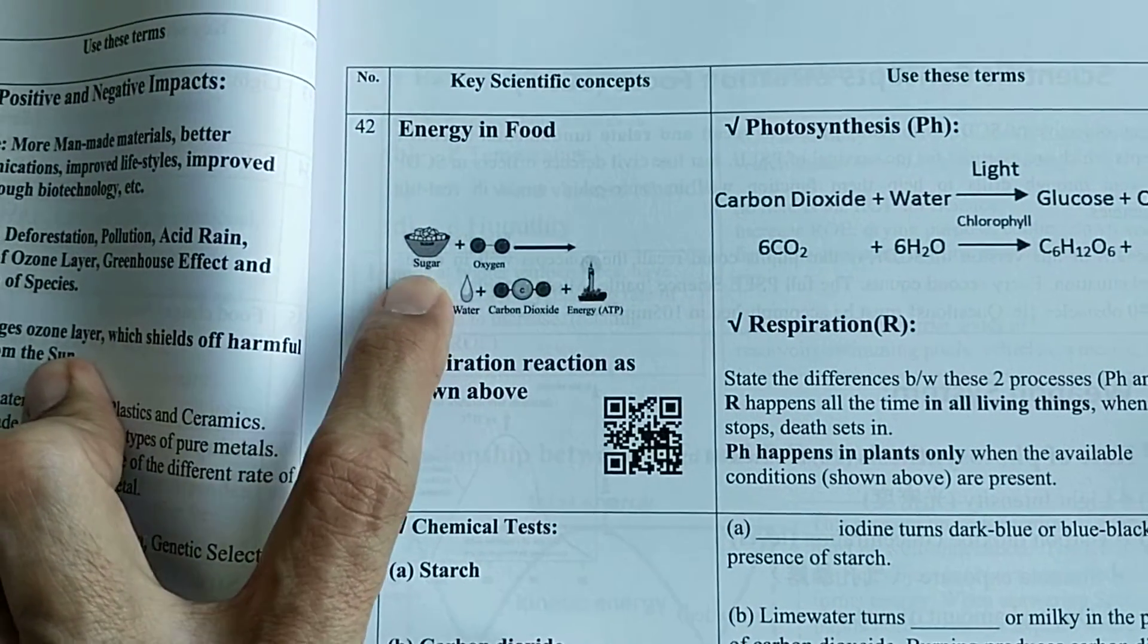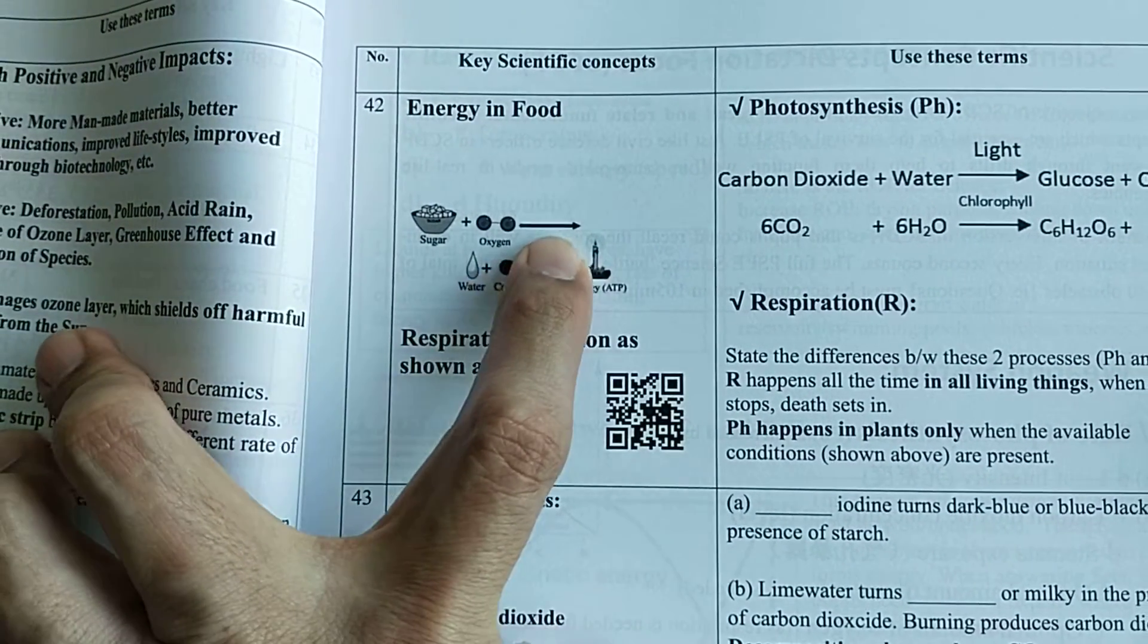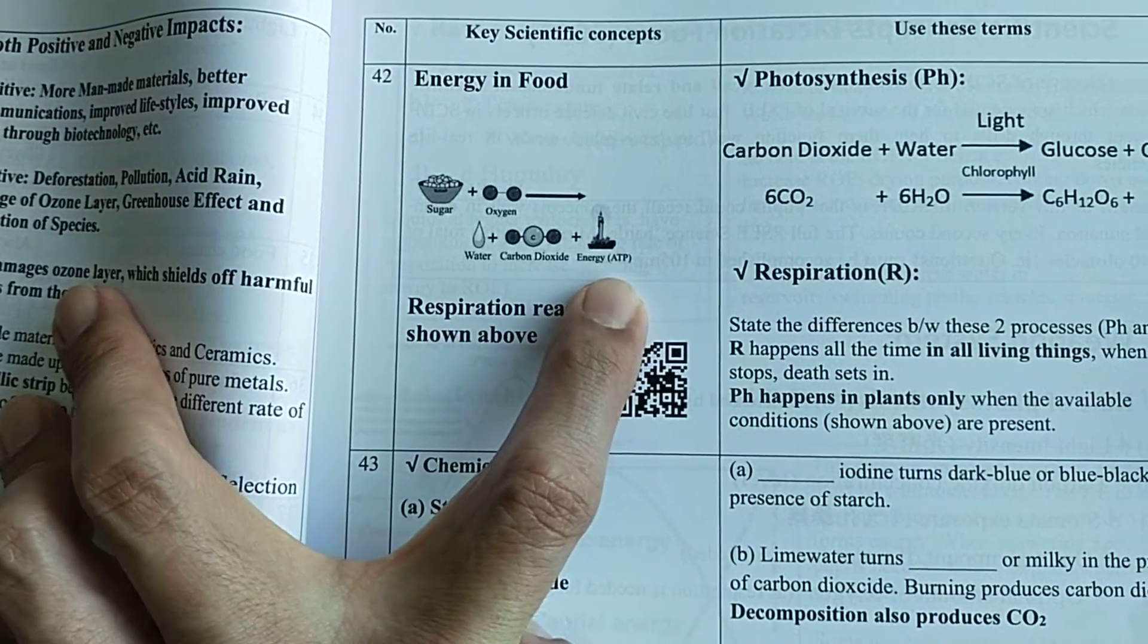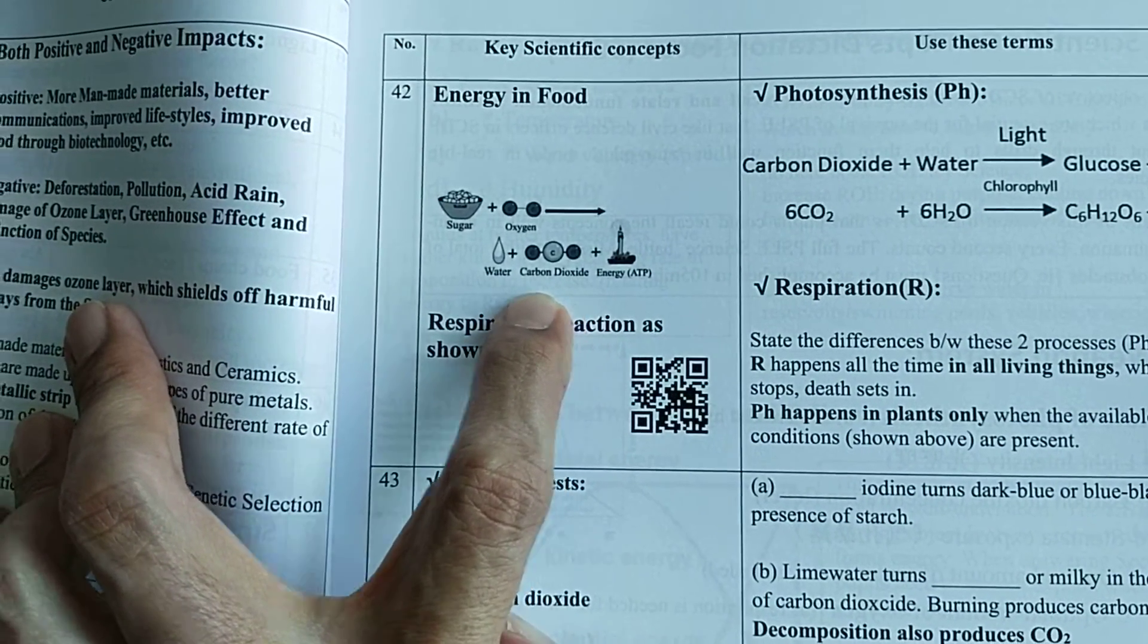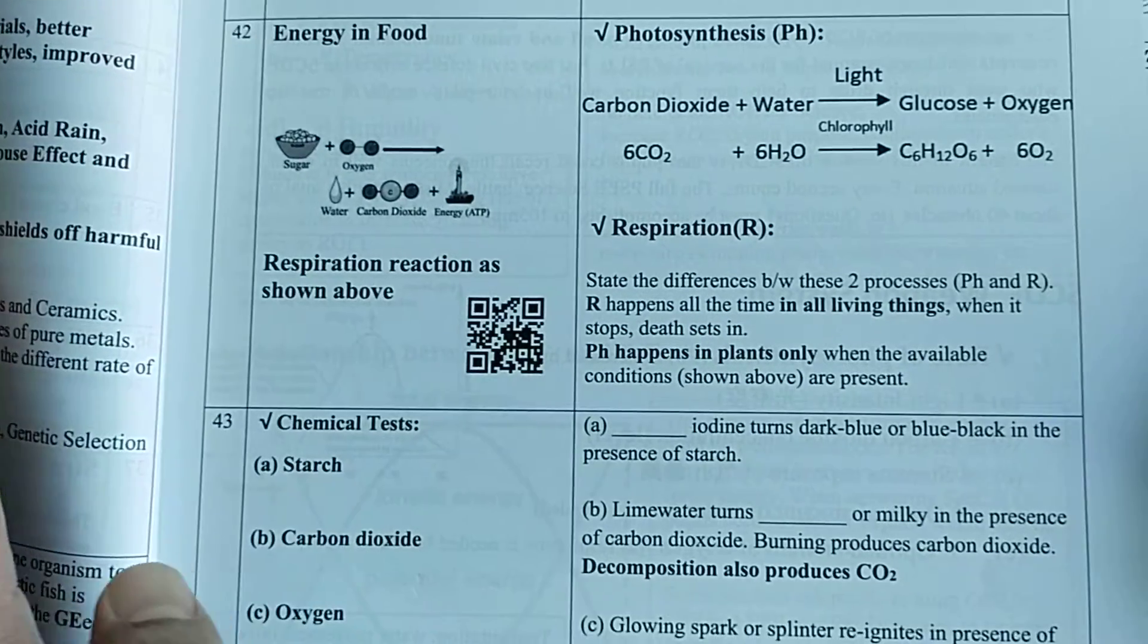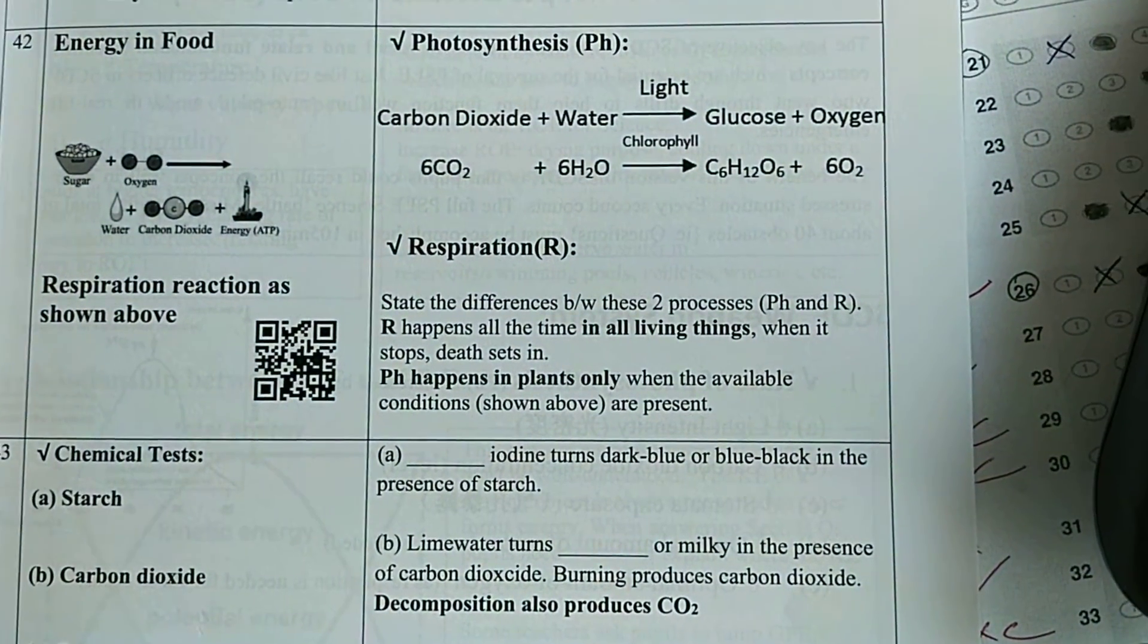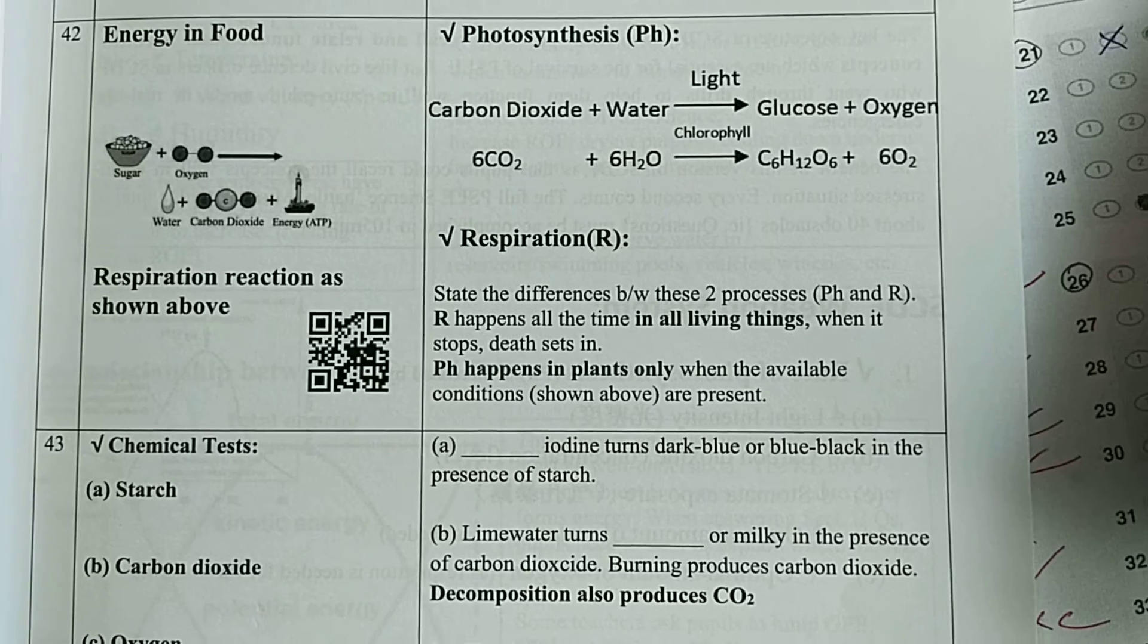They're also supposed to know the process of respiration. It's represented here. Sugar plus oxygen gives out, most important is energy. The byproducts are carbon dioxide and water. It's important that the student needs to know the differences between photosynthesis and respiration.